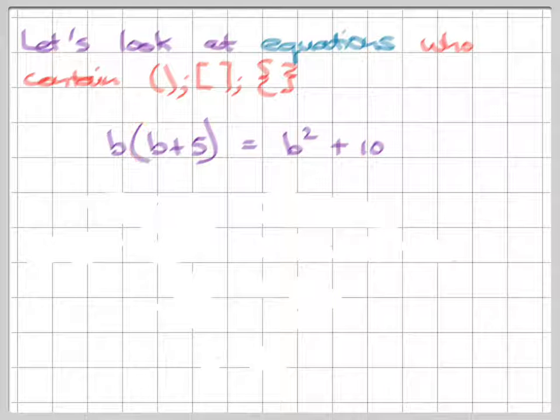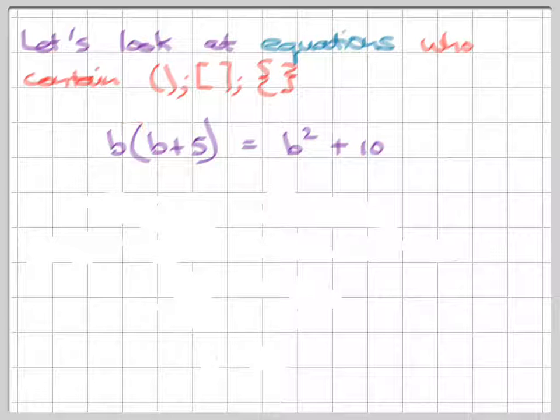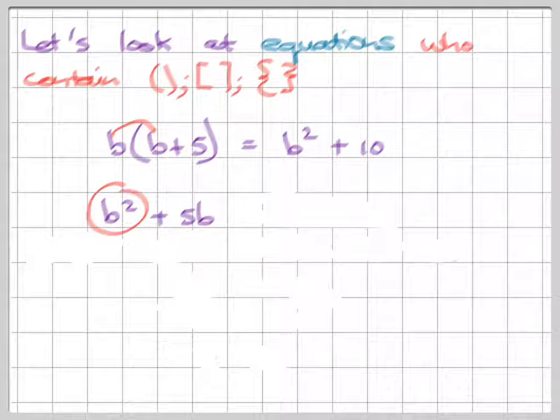Right, so we first have to, the rule is always we're going to multiply that in there, whether it's a sign or whether it's an alphabetical character or number. It has to be multiplied in like that. So let's do that first. So we're going to end up then with b² + 5b. Okay, so that is our parentheses taken care of.